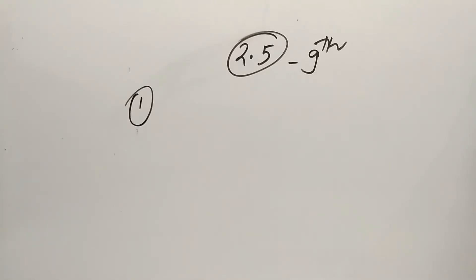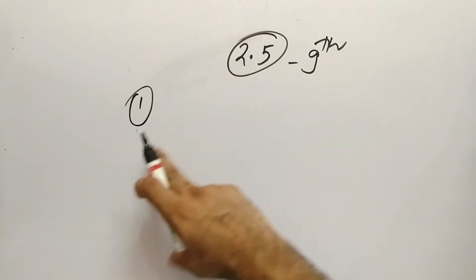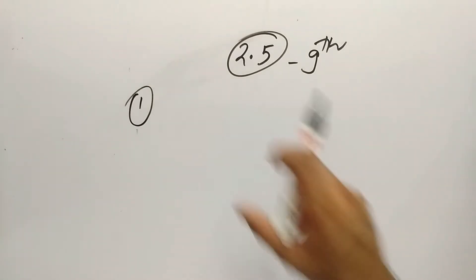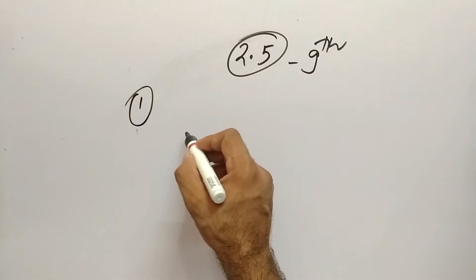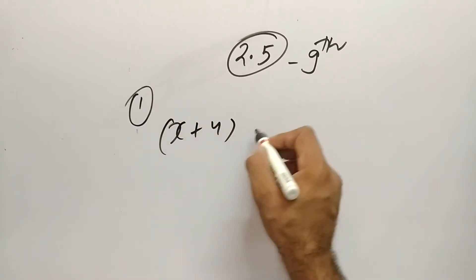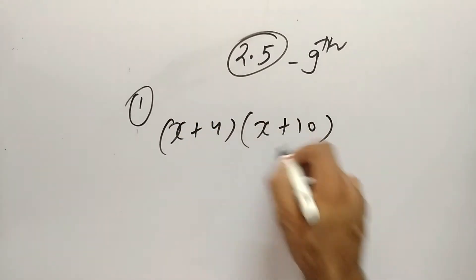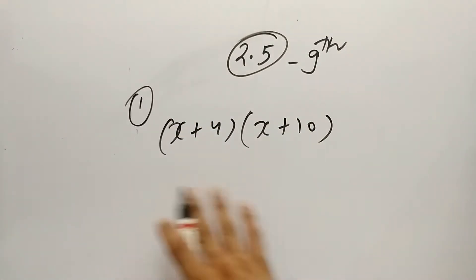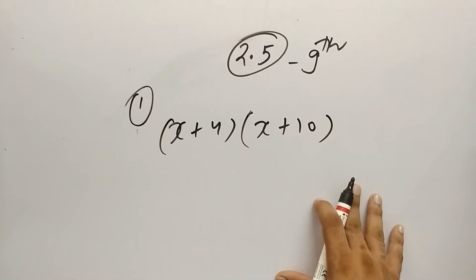Okay, so in this video we are going to solve question number 1, Exercise 2.5, Class 9. The first question is (x+4)(x+10). We have to solve this question by using a suitable identity.